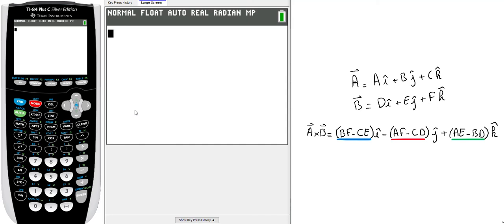I will show you how to create a program in your calculator to find the cross product between two 3D vectors. On the right you can see two vectors a and b with three components each.